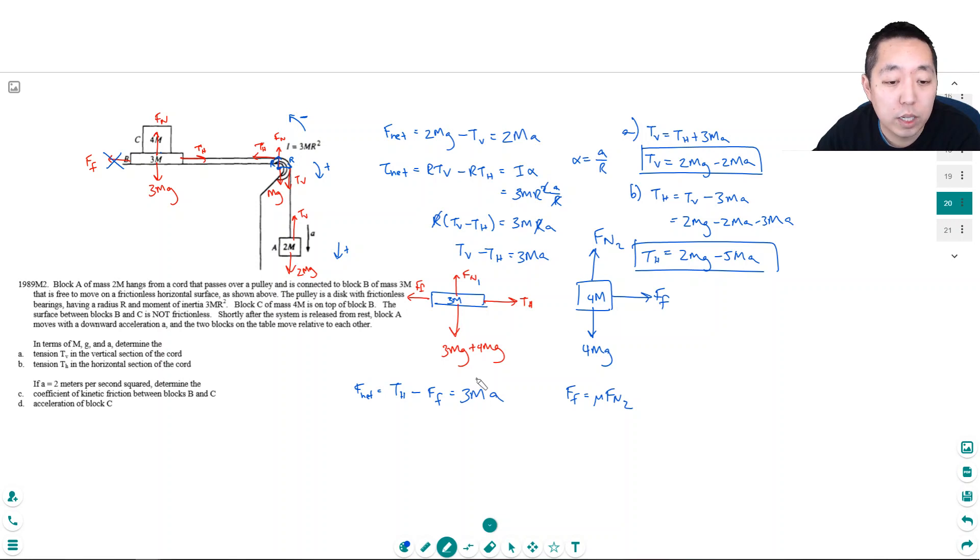Acceleration of block C. So this free body diagram here. Th minus FF equals 3MA. If A equals 2, then we know that Th is given by 2Mg minus 10M. Because I just plug in A equals 2 there. We'll use G equals 10. This is 20M minus 10M. That equals 10M.